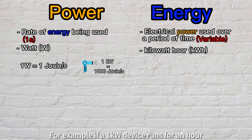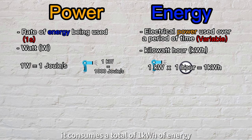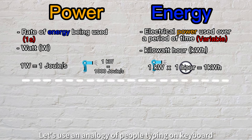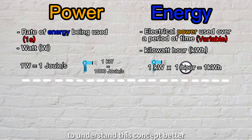For example, if a 1 kilowatt device runs for an hour, it consumes a total of 1 kilowatt hour of energy. Let's use an analogy of people typing on keyboard to understand this concept better.